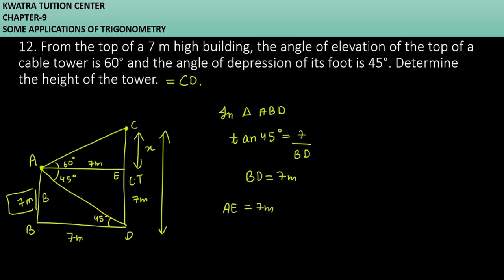Now what do we find? X. So you will use which triangle? Triangle AEC. In triangle AEC, we will have tan 60. Tan 60 will be equal to CE over AE.